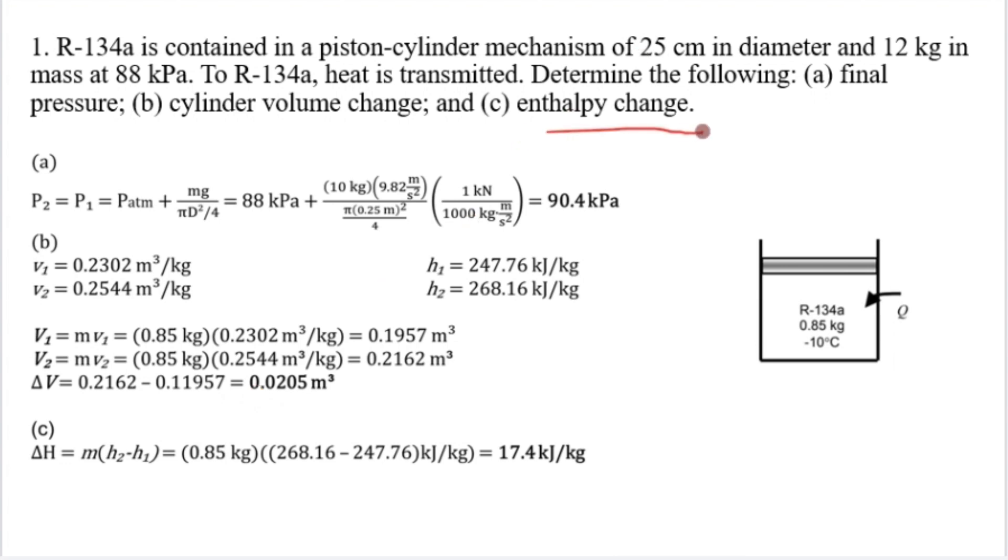Last is the enthalpy change. Change of H equals m times H2 minus H1. We need to calculate 0.85 kg times 268.16 minus 247.76 kJ per kg. The final result will be 17.4 kJ per kg.